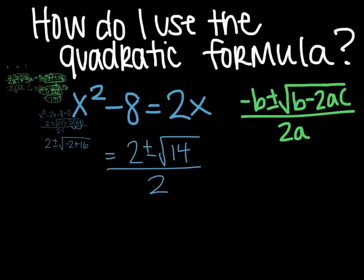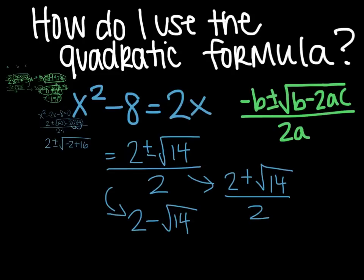So 2 plus the square root of 14 divided by 2, or your other option would be 2 minus the square root of 14 divided by 2.